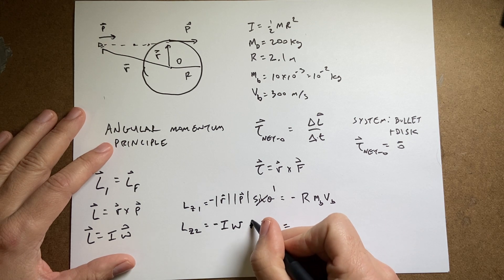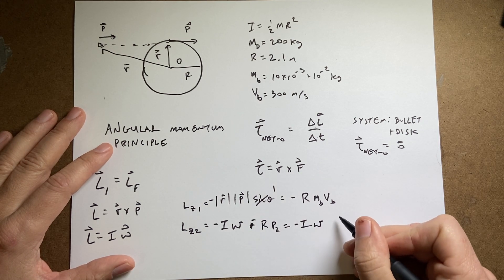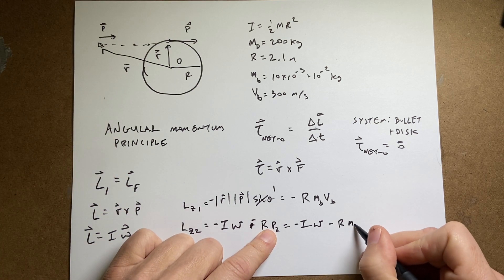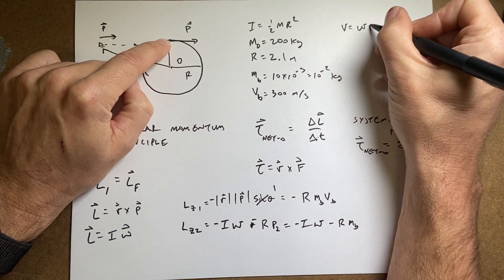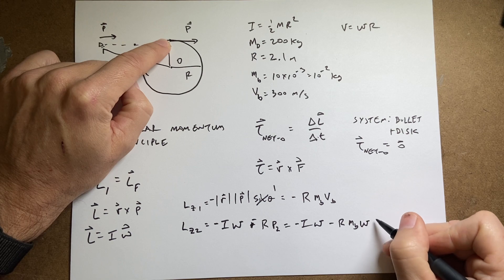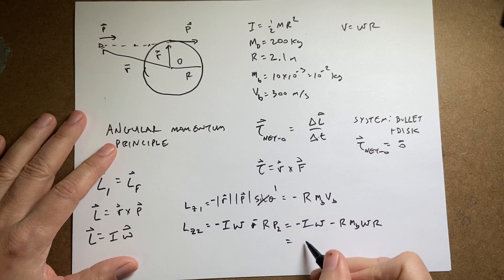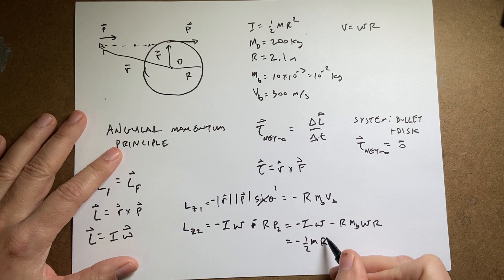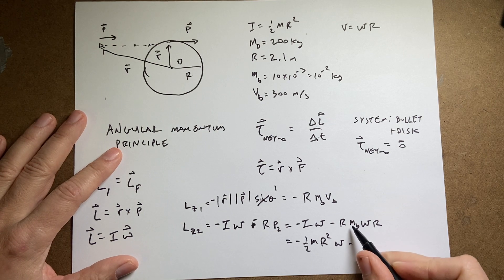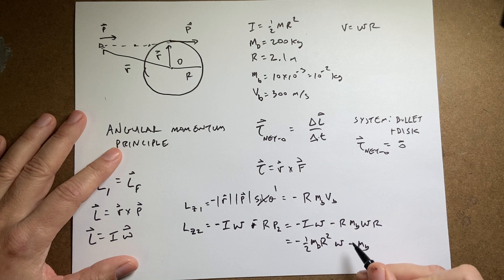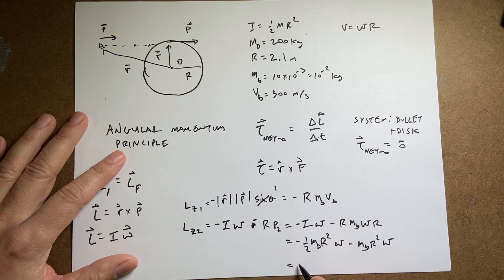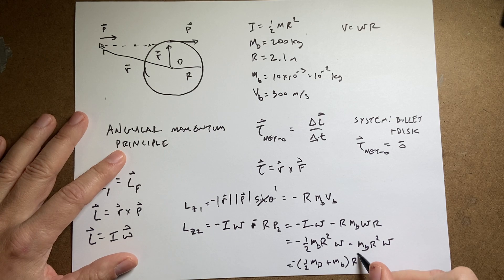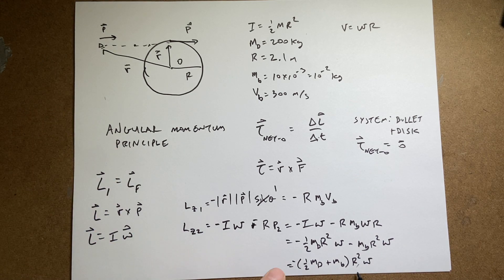And then let's put this as negative one half m disk r squared omega minus m_b r squared omega. Now I can factor that out and I get negative one half m disk plus mass of the bullet times r squared omega. And I want this to equal this and solve for omega. Let's switch to a new sheet of paper.